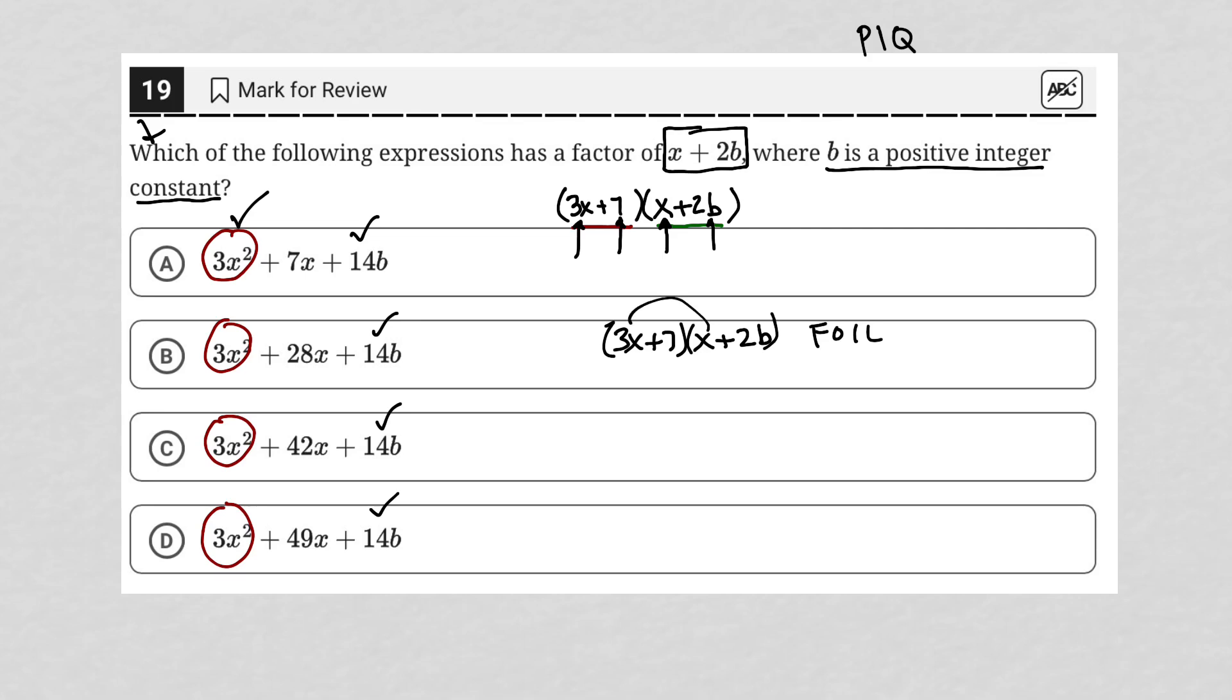I'm going to expand this using FOIL to see what I get. So 3x times x is 3x squared as expected. Outer times outer would be 6xb or 6bx, it doesn't matter. And inner times inner would be 7x, so plus 7x. And last times last would be plus 14b. All right, so expected that, expected that.